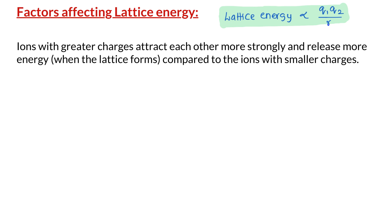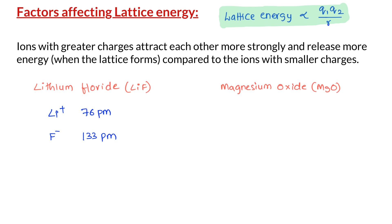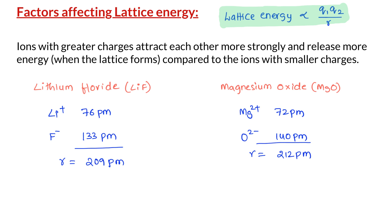Let us compare the lattice energy of two different ionic compounds: lithium fluoride and magnesium oxide. The ionic radii of Li+ and F− are 76 picometers and 133 picometers, so the distance between these two ions in the ionic crystal is 209 picometers. Similarly, the ionic radius of Mg2+ is 72 picometers and O2− is 140 picometers, giving a distance of 212 picometers. The distance between the individual ions in both crystals is roughly the same.